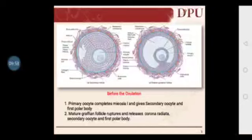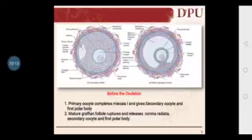Once the secondary oocyte is released, meiosis 2 resumes only if there is sperm in the female reproductive tract. Anaphase 2 and telophase 2 are completed, and the secondary oocyte gives two haploid cells: the larger one is called the ovum or egg, and the smaller one is the second polar body. The nuclei of the sperm fuses with the nuclei of the ovum to ultimately give a diploid zygote. This is oogenesis.